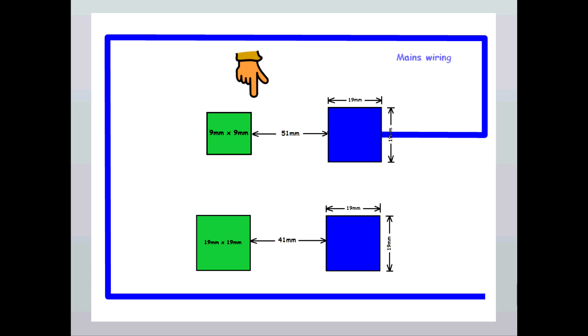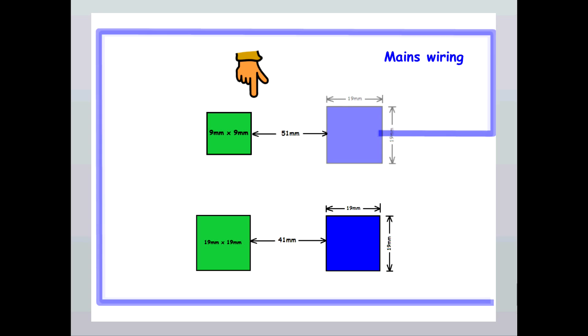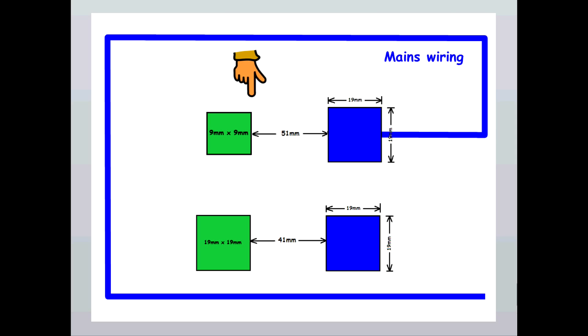If a capacitive sensor is connected to the mains wiring, effectively one of the plates area is increased significantly. The absolute delta C and therefore the signal level is higher.